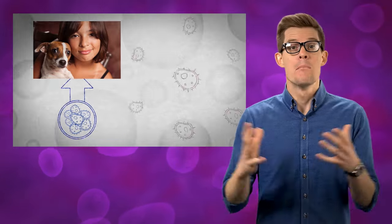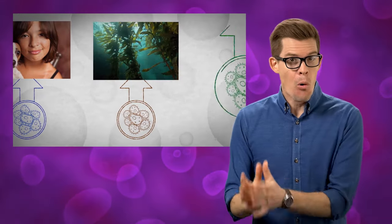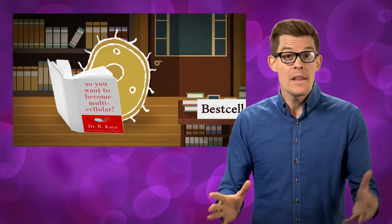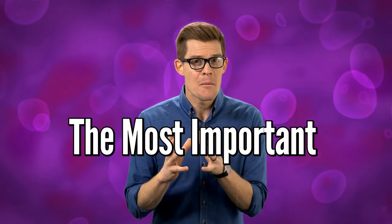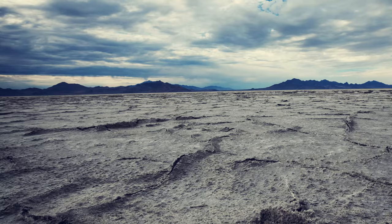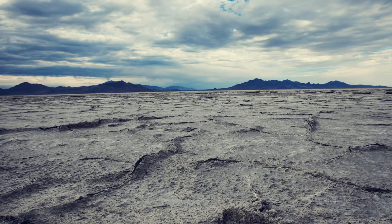In our last video, I talked about why and how life became multicellular — one of the most important transitions in our evolutionary history, but still one that happened dozens of times. Today, I'm going to tell you about a different event, one so rare it only happened once in the nearly 4 billion years life has been on Earth — what I would call the most important moment in history. If it hadn't happened, we got lucky.